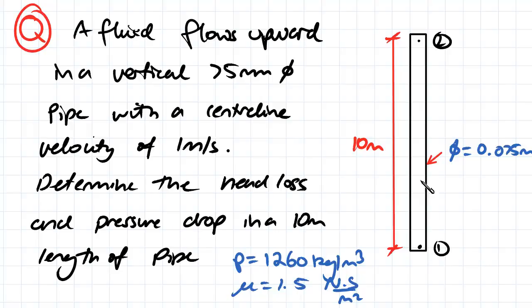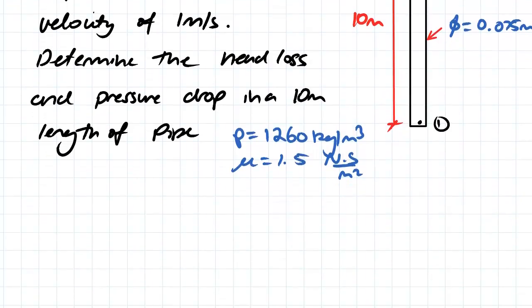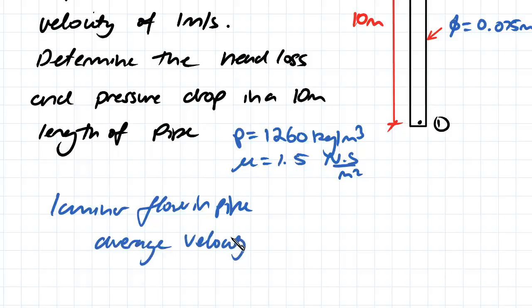So the first thing is we don't want to use that centerline velocity. We want to be using the average velocity in our equations. For a laminar flow in pipe, the average velocity is going to be equal to half of the maximum velocity. So it's going to be half times one, which is going to be 0.5 meters per second for our average velocity.